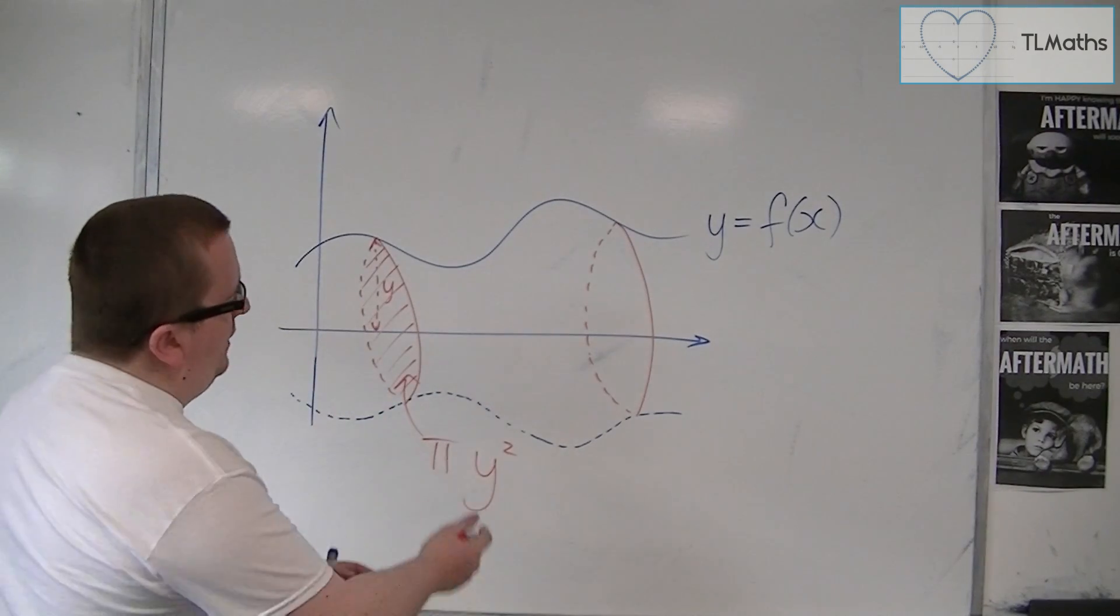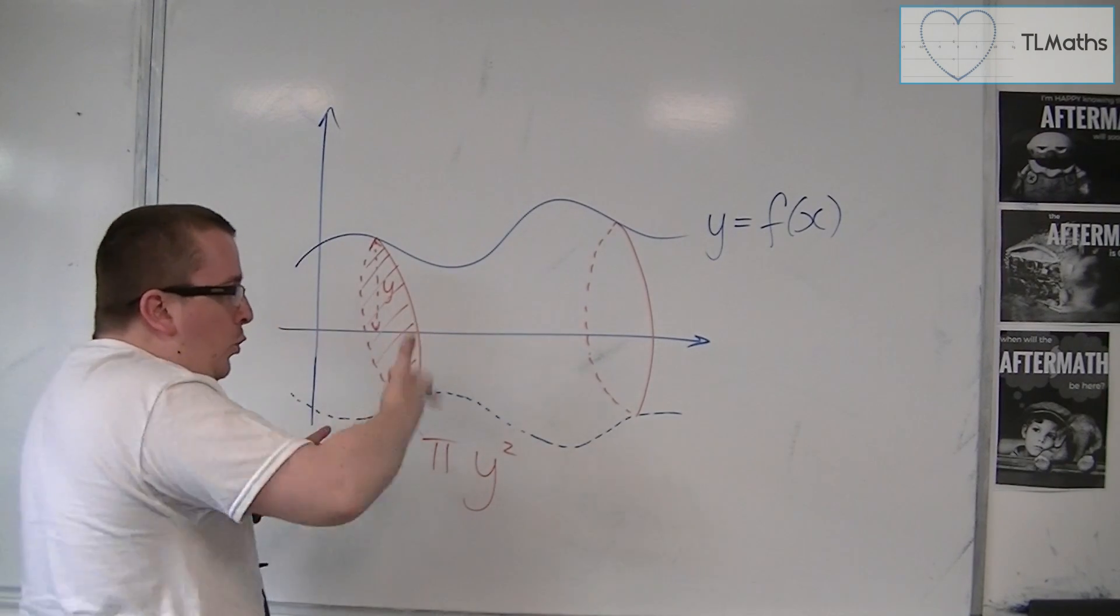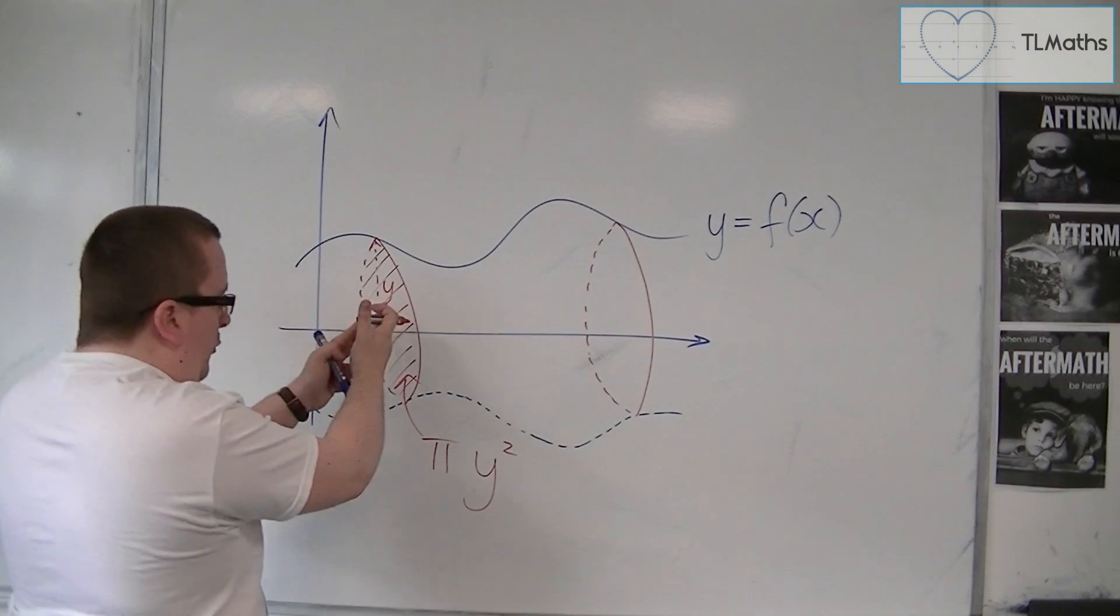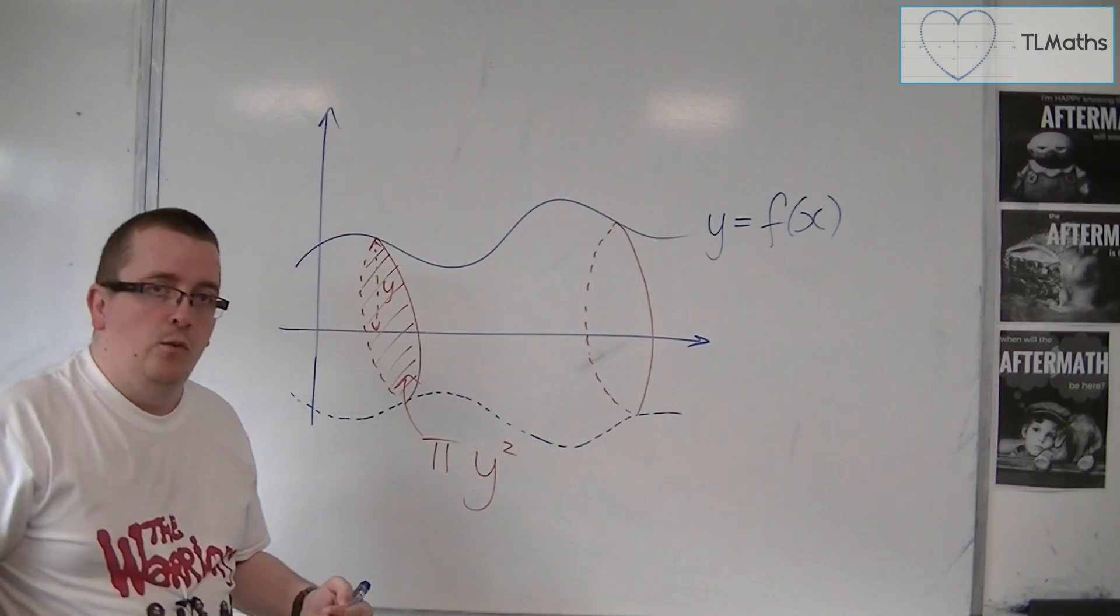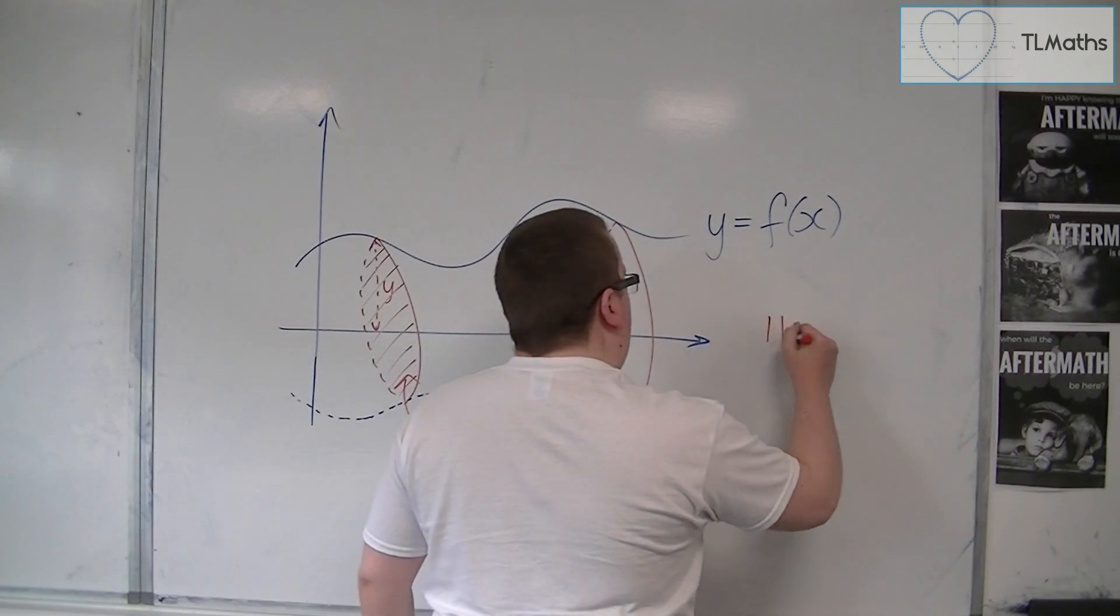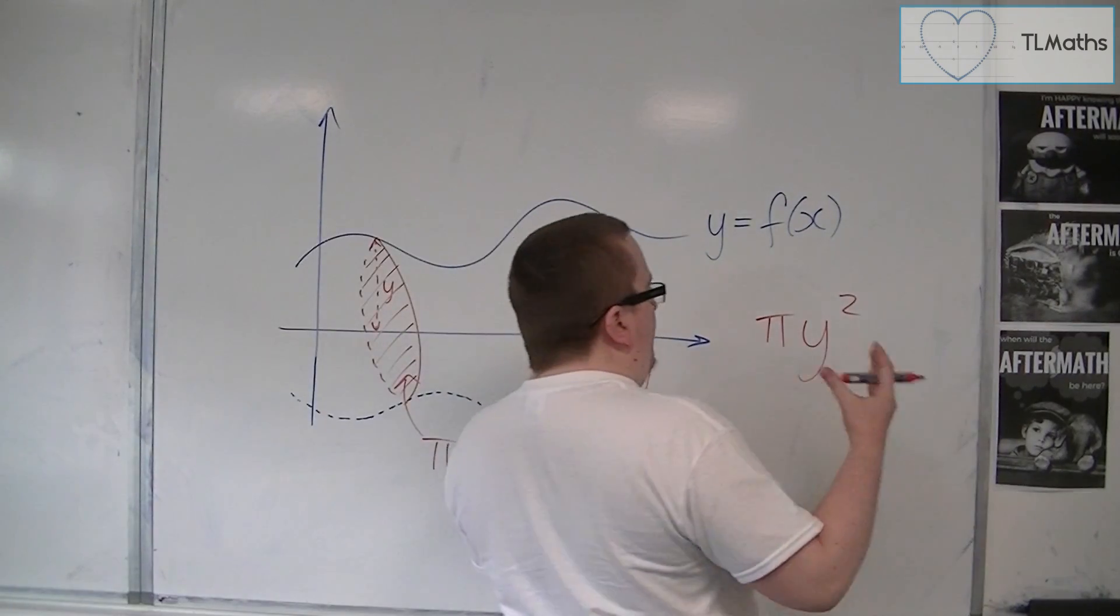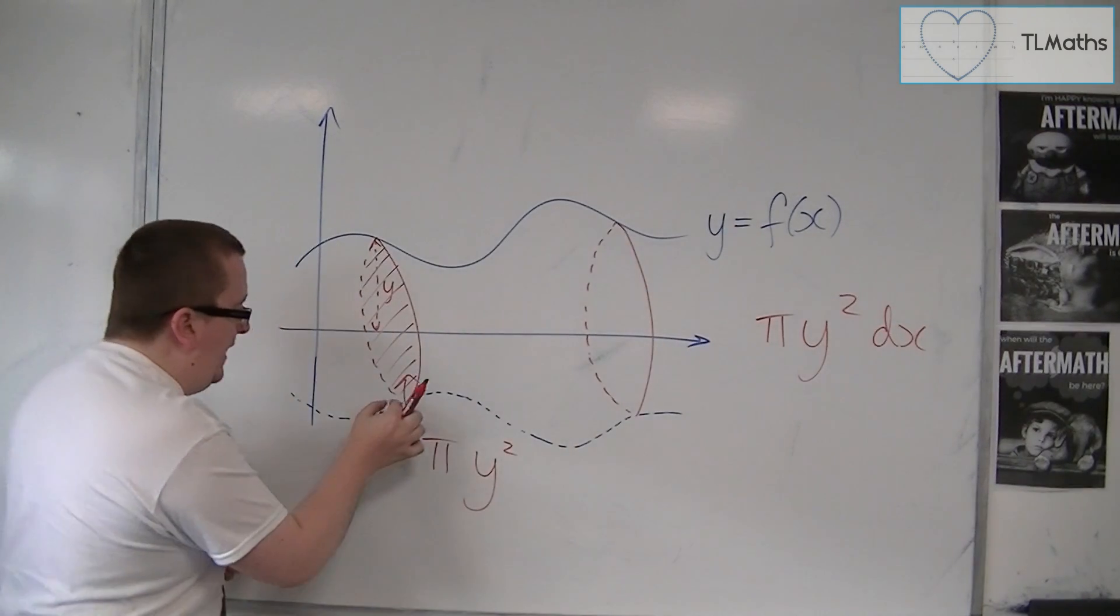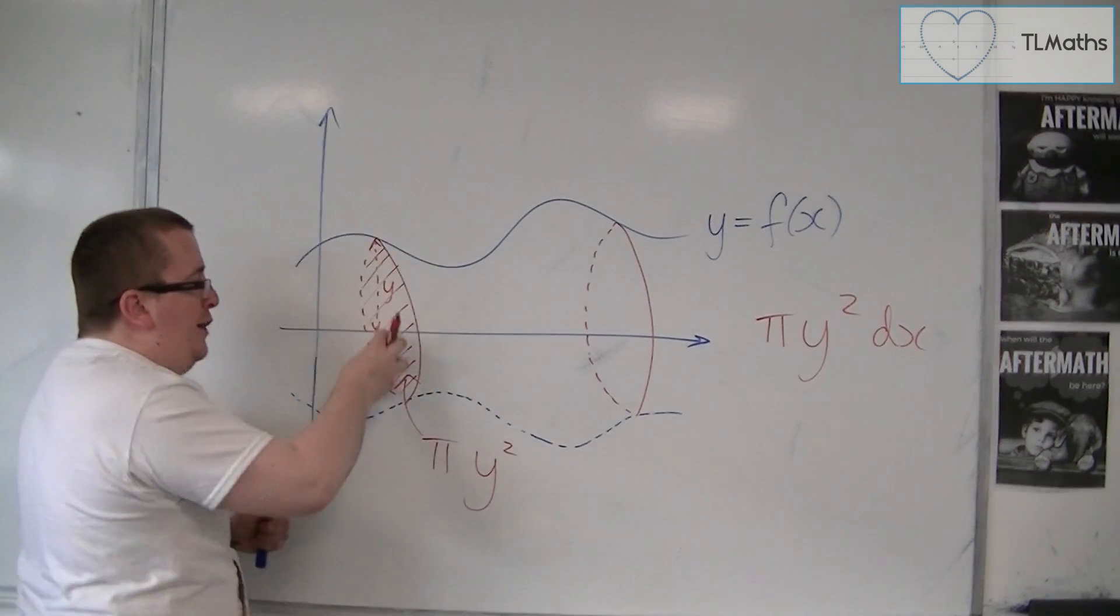What we're going to do is, effectively a volume is adding up all those areas together, because we're taking that area and multiplying it by the length of the shape. What we're saying is that you get your pi y squared, and you're effectively multiplying it by a little bit of x each time, a very thin strip.